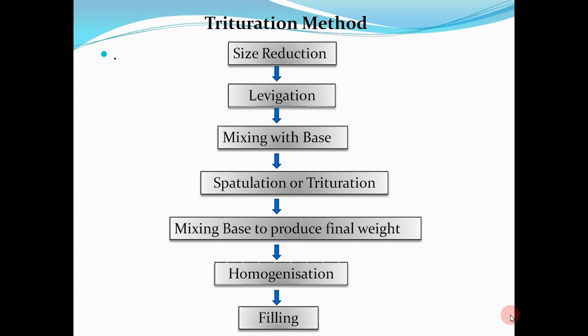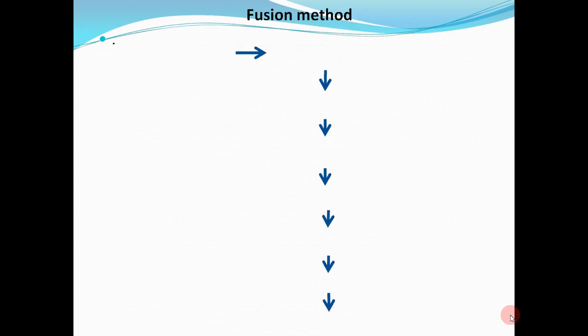An example of this method is zinc oxide ointment. To summarize: first, size reduction takes place; then levigation with a small quantity of base; then trituration or spatulation occurs; then the remaining quantity of base is added to produce a final wet mass; homogeneous mass is produced and filled into the container. This is the trituration method.